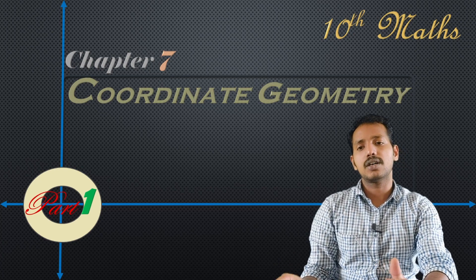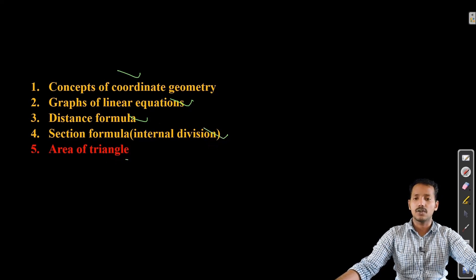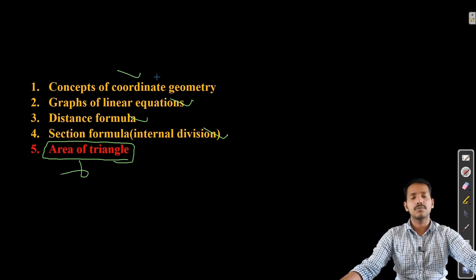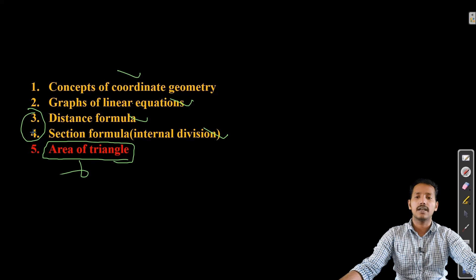In this chapter there are five topics: first is the concept of Coordinate Geometry, next is Graphs of Linear Equations, then Distance Formula and Section Formula — only Internal Division — and the fifth topic is Area of Triangle. But Area of Triangle is deleted from your syllabus for this year, so we are not going to discuss that. We will be discussing only the first four topics. The concept of Coordinate Geometry is already learned in Class 9, and Graphs of Linear Equations was discussed in Chapter 3. The main two new topics are Distance Formula and Section Formula. I will discuss Distance Formula in this video and Section Formula in the next video.